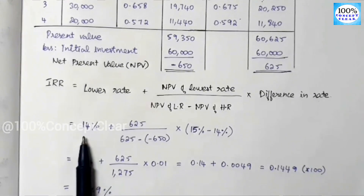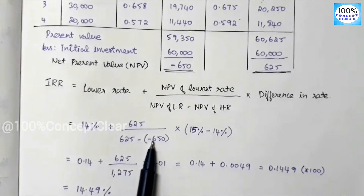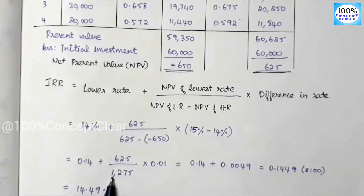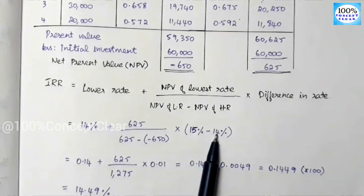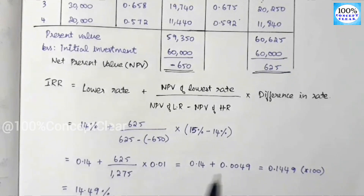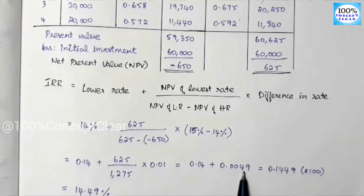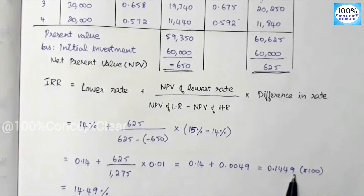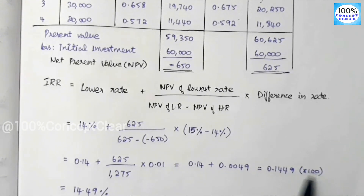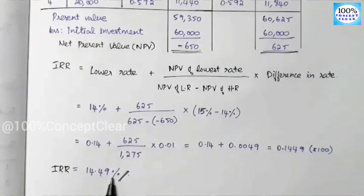Solving: 0.14 plus 625 divided by (625 plus 650) — because minus minus gives plus — equals 625 divided by 1275, multiplied by 1% (0.01). That gives 0.0049. So 0.14 plus 0.0049 equals 0.1449. Multiplied by 100, IRR rate is 14.49%.